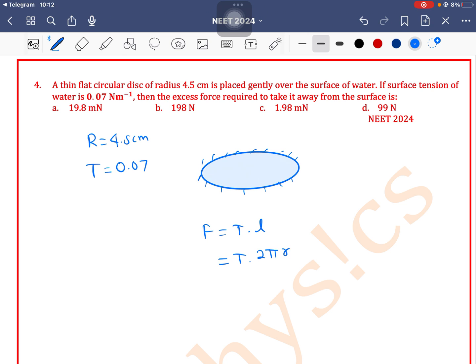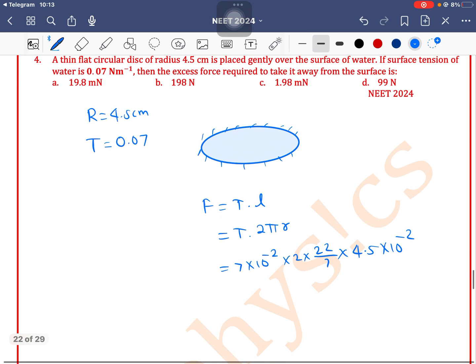The effective length is the circumference, 2πr. So tension is 7×10^-2 times 2π which is 22/7, times the radius 4.5 centimeters or 4.5×10^-2. The 7s